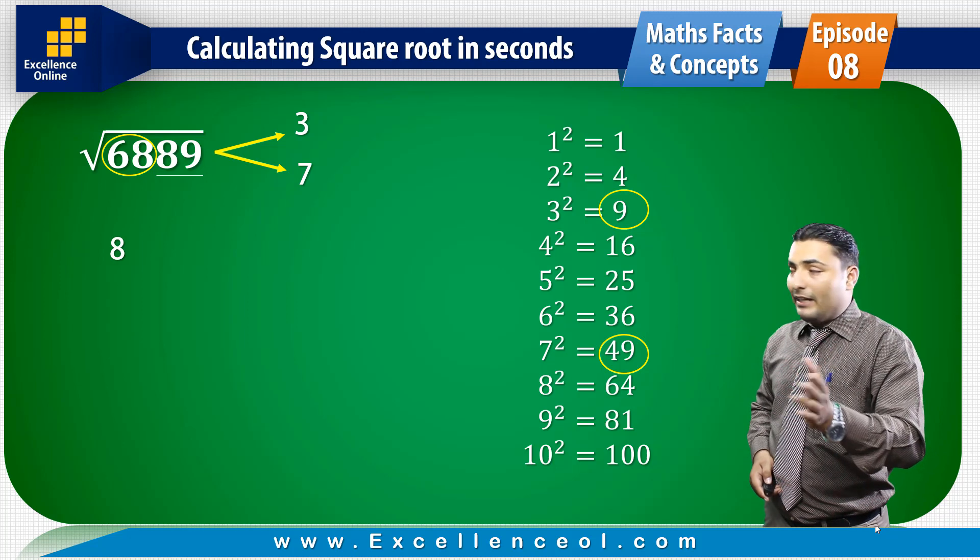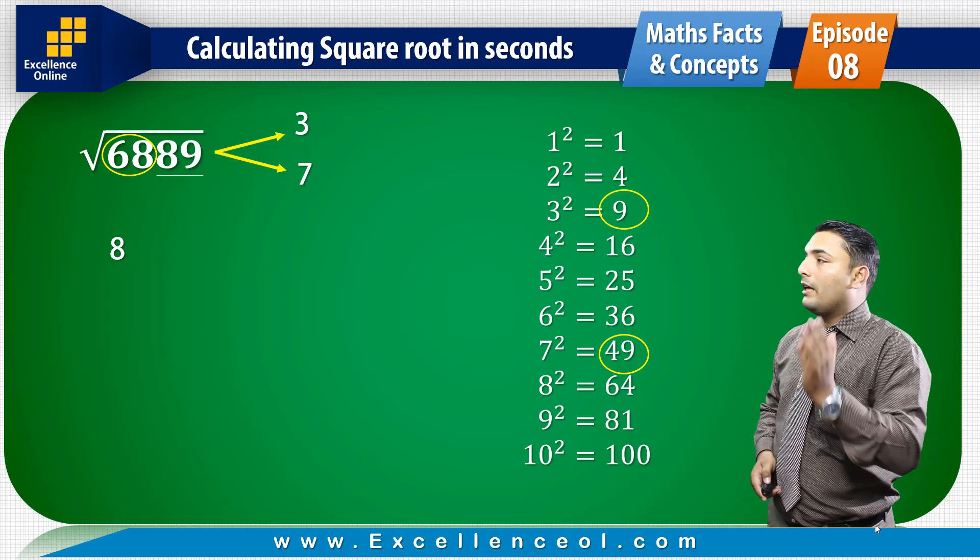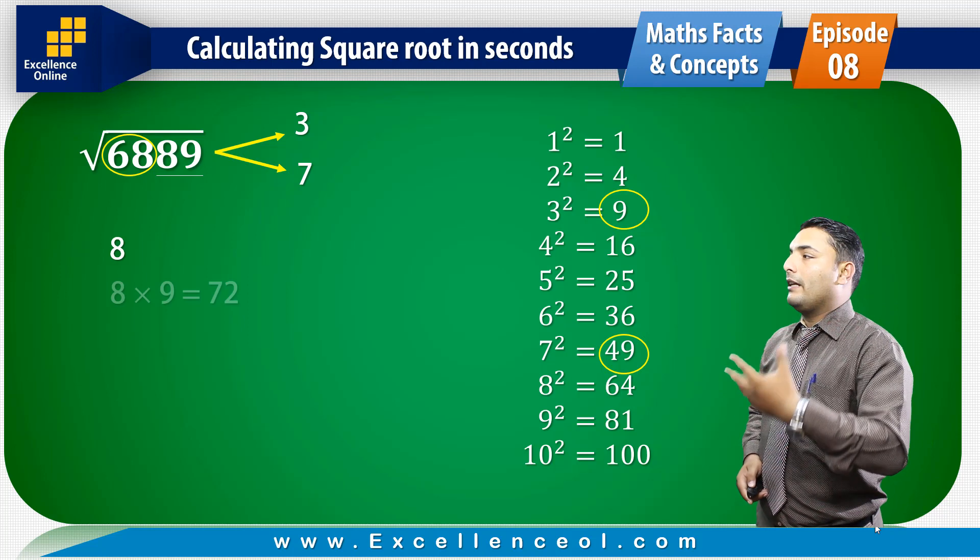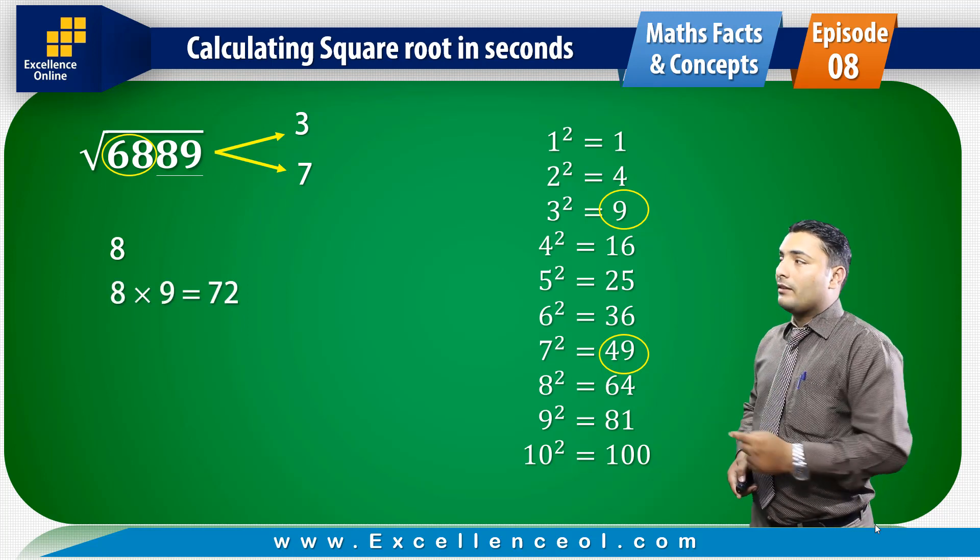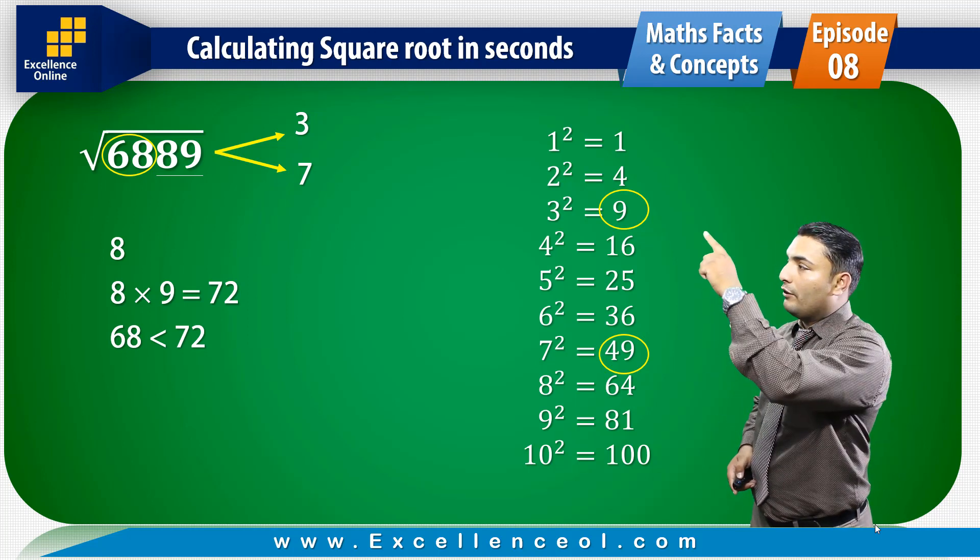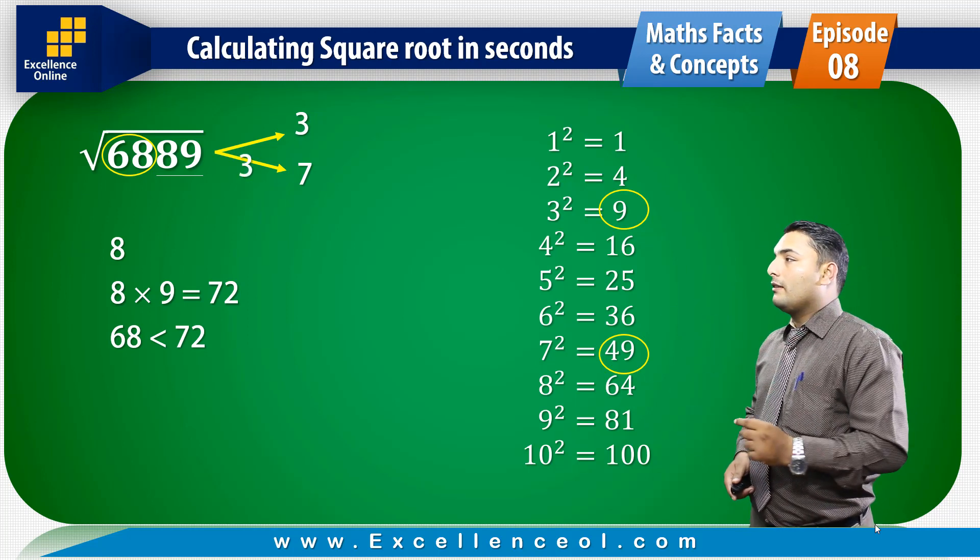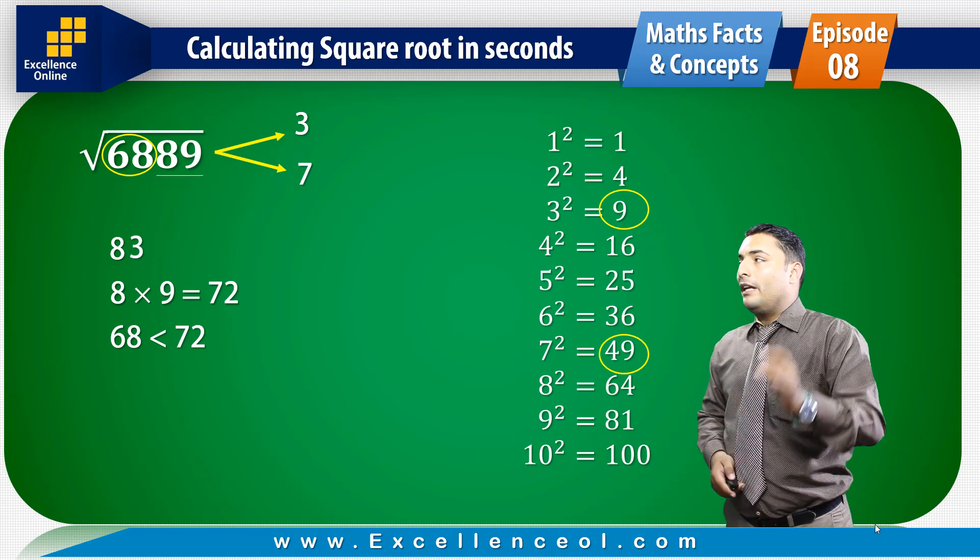Now we have to see if 8 pairs with 3 or 7. The next number is 9. 8 times 9 is 72. The original number is 68, which is smaller than 72. So we have to take 3. Therefore, 6889 square root is 83.